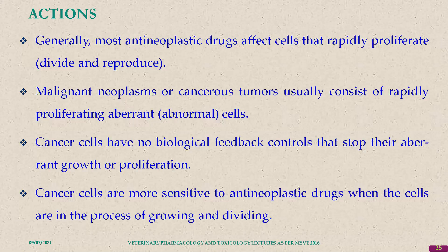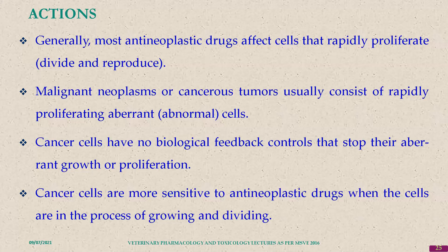Regarding the mechanism of action, most antineoplastic drugs affect rapidly proliferating, dividing, and reproducing cells. They do not differentiate between normal and cancer cells — that's why side effects exist. Malignant neoplasms consist of rapidly proliferating, aberrant cells. Cancer cells have no biological feedback controls to stop their aberrant growth. Aberrant cancer cells are more sensitive to antineoplastic drugs when cells are in the process of growing and dividing.